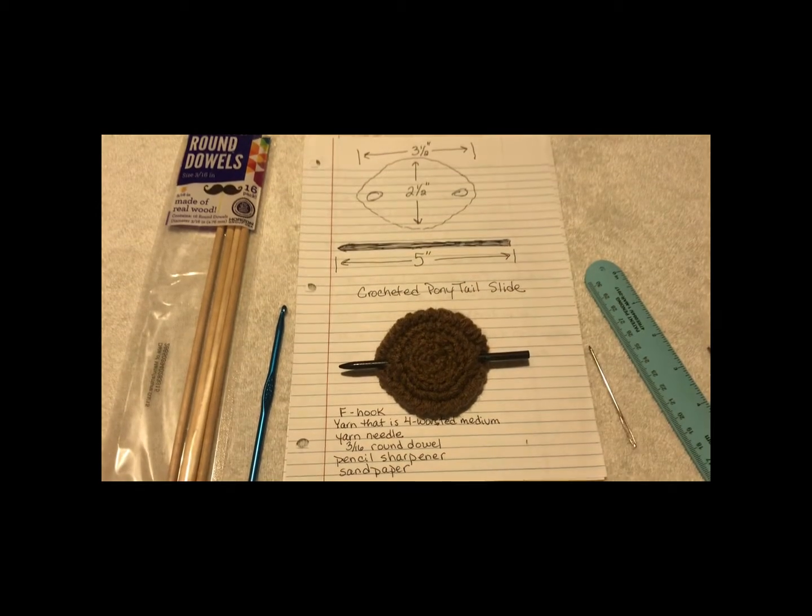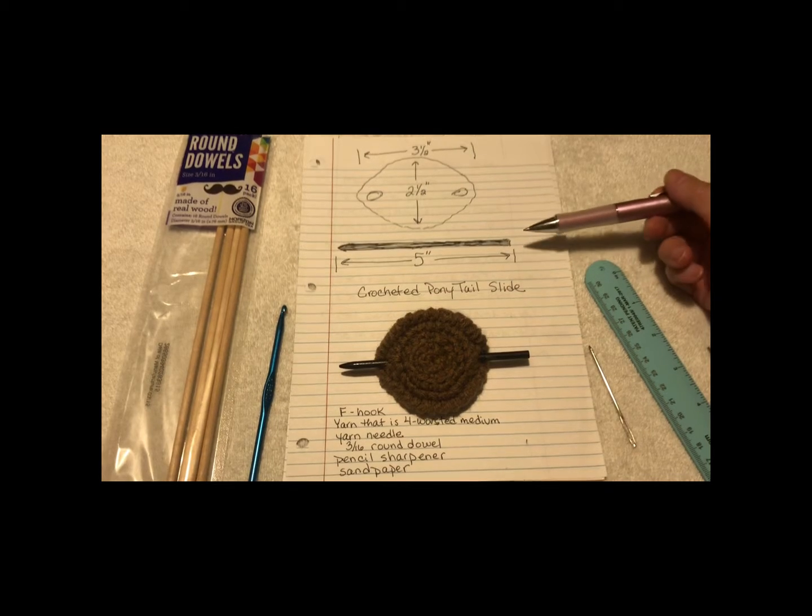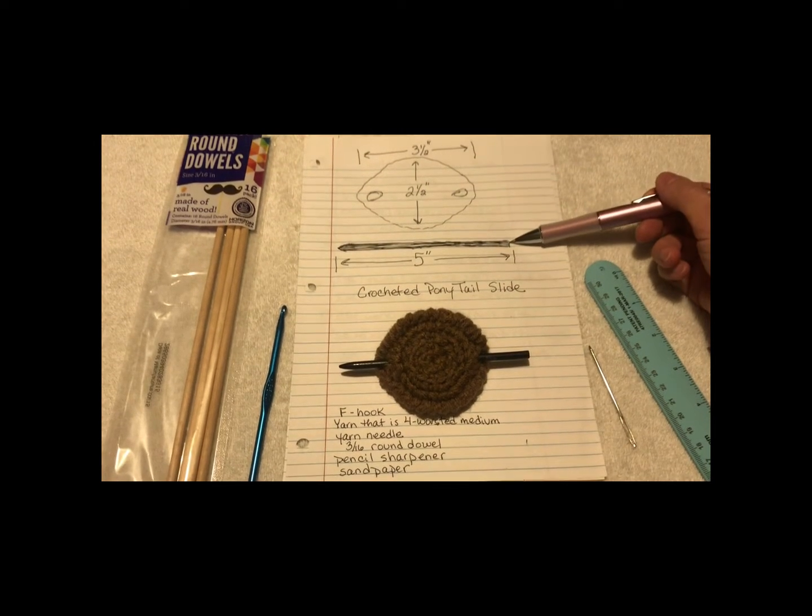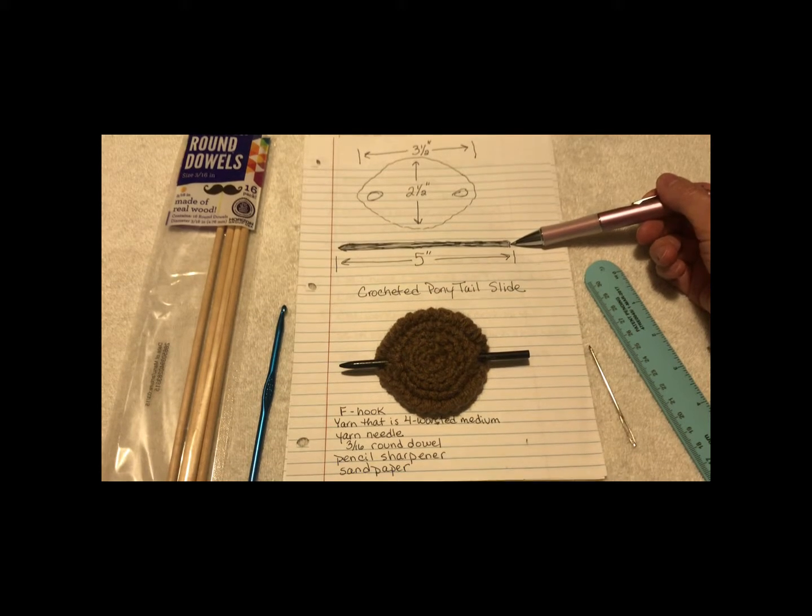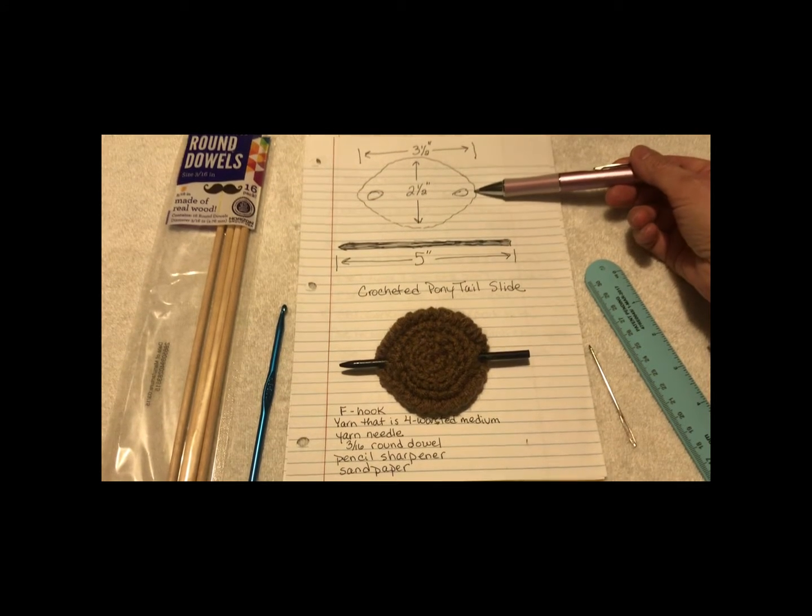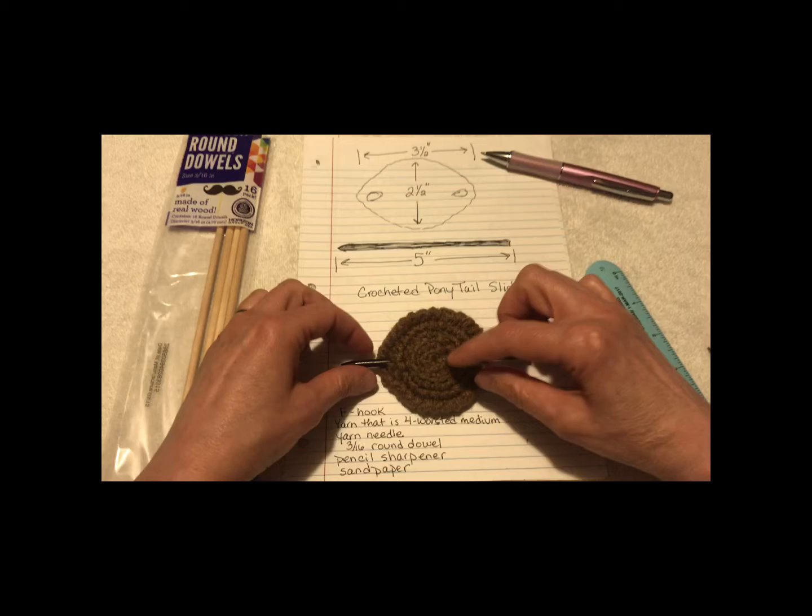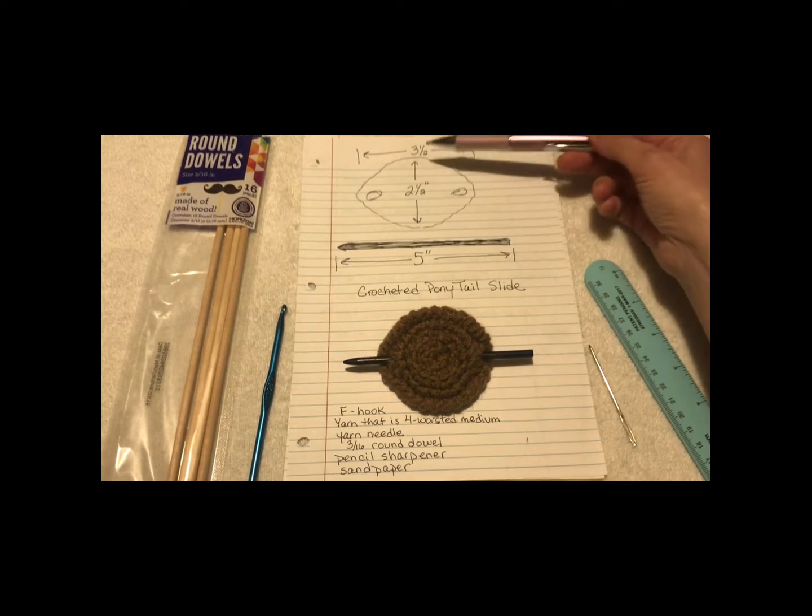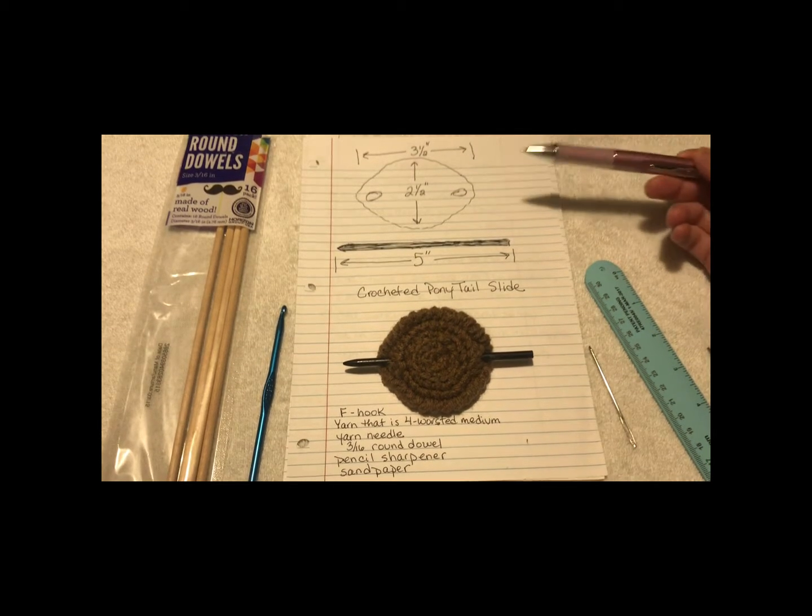And the stick itself, after sanding and all is said and done, will be about 5 inches. When this is taken out and laid flat, it'll be 2 1⁄2 inches high by 3 1⁄2 inches.